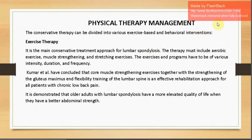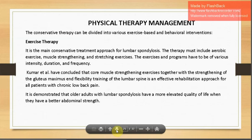Physiotherapy management involves exercise-based and behavioral interventions. Exercise therapy — the main conservative treatment for lumbar spondylosis — must include aerobic exercise, muscle strengthening, and stretching at various intensities, durations, and frequencies. Kumar et al. concluded that core muscle strengthening exercises together with strengthening of gluteus maximus and flexibility training of the lumbar spine is a very effective rehabilitation approach for chronic low back pain. Older adults with lumbar spondylosis show elevated quality of life when they have better abdominal strength.